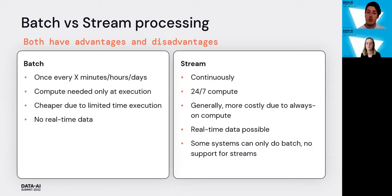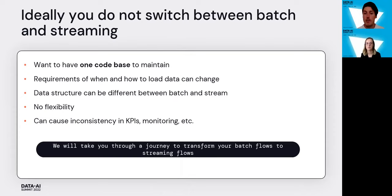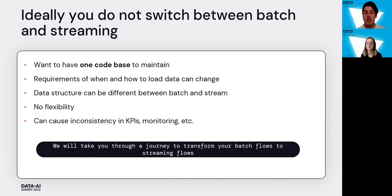Some systems can only do batch and do not support streams. For example, Kafka is easy to put into a stream, and file systems can also be put in a stream, but it's always a bit trickier. Ideally, you do not want to switch between batch and streaming. Ideally you have one main codebase to maintain, especially for going from bronze to silver and silver to gold.